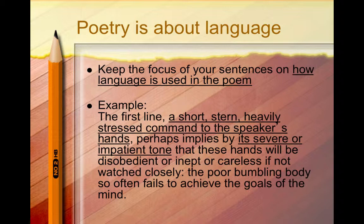Example: The first line, a short, stern, heavily stressed command to the speaker's hands, perhaps implies, by its severity or impatient tone, that these hands will be disobedient or inept or careless if not watched closely. The poor, bumbling body so often fails to achieve the goals of the mind. Notice how the sentence calls attention to the way the first line in the poem is written — its stress and tone — after which the writer suggests why the poem may be written that way, thereby linking how the poem is written to its meaning or theme.